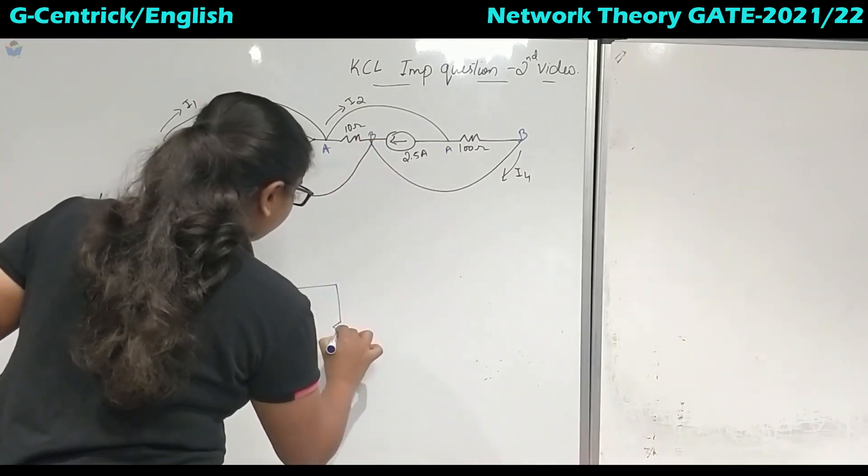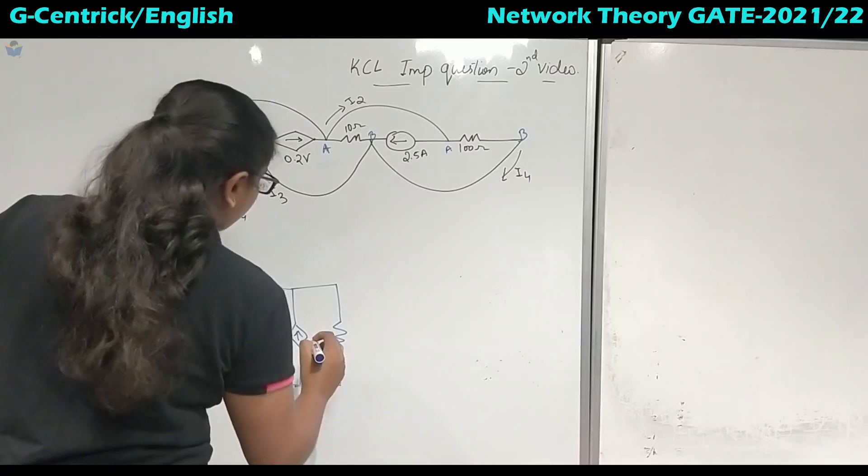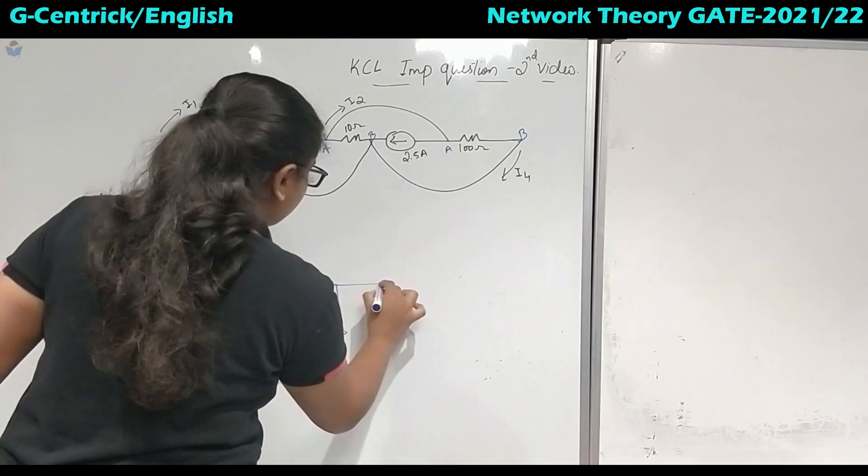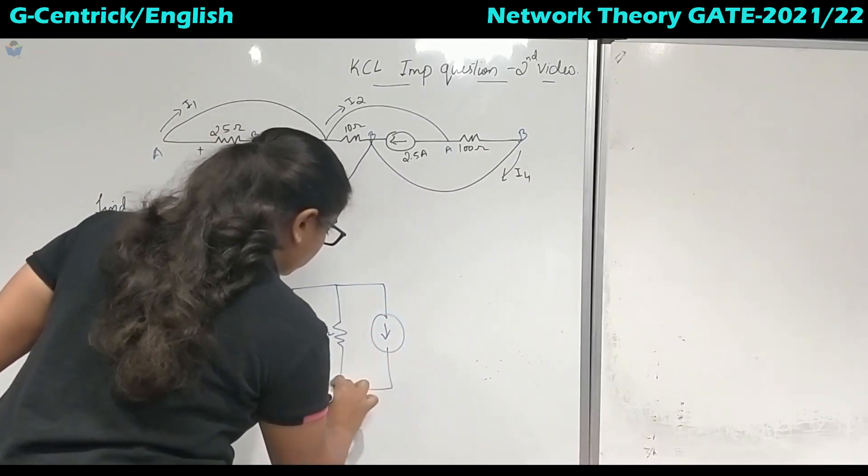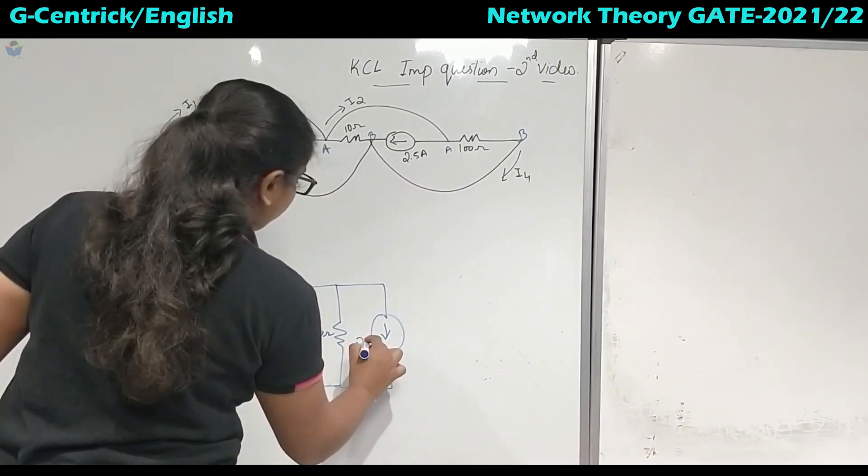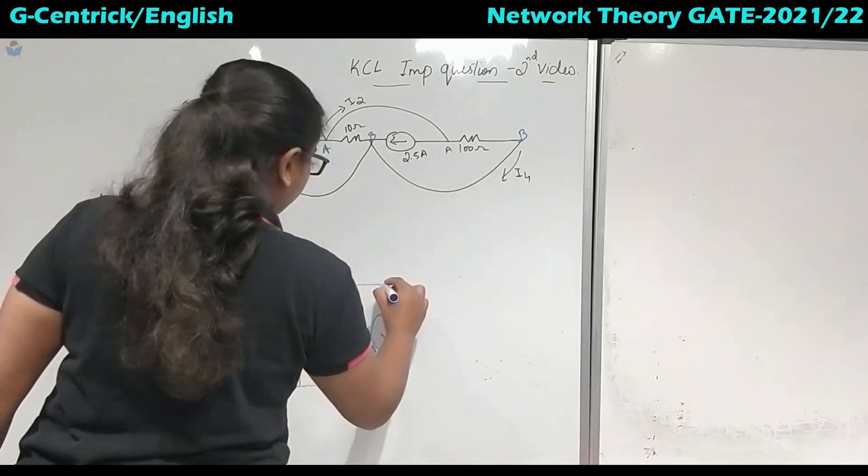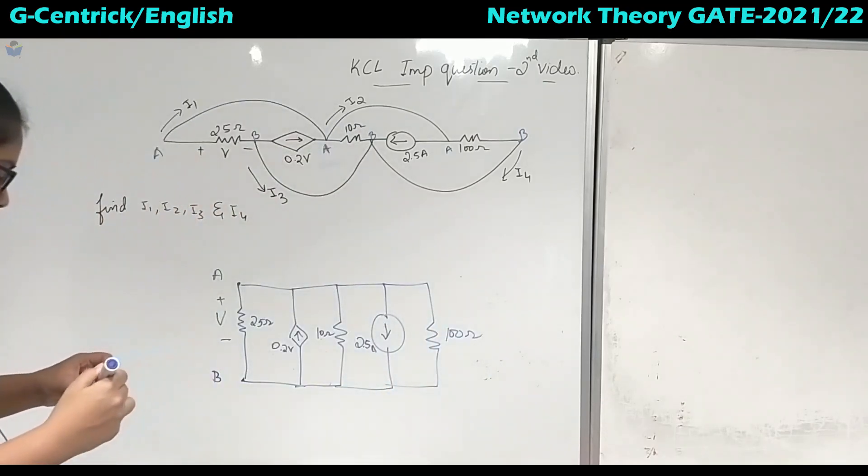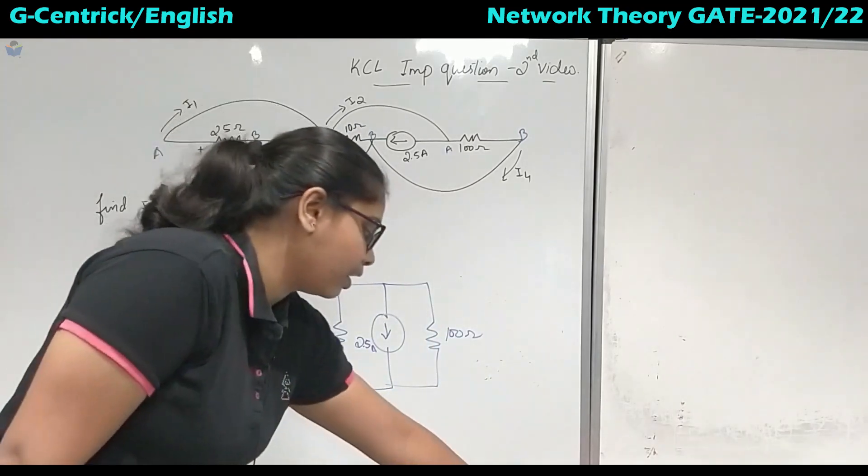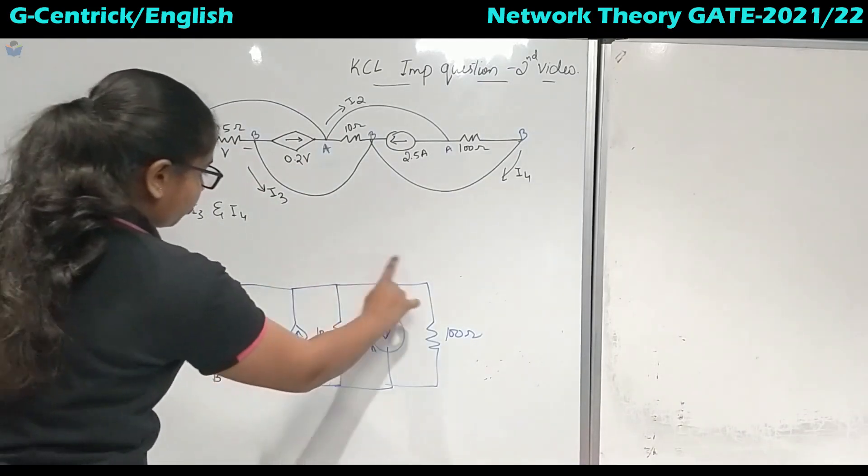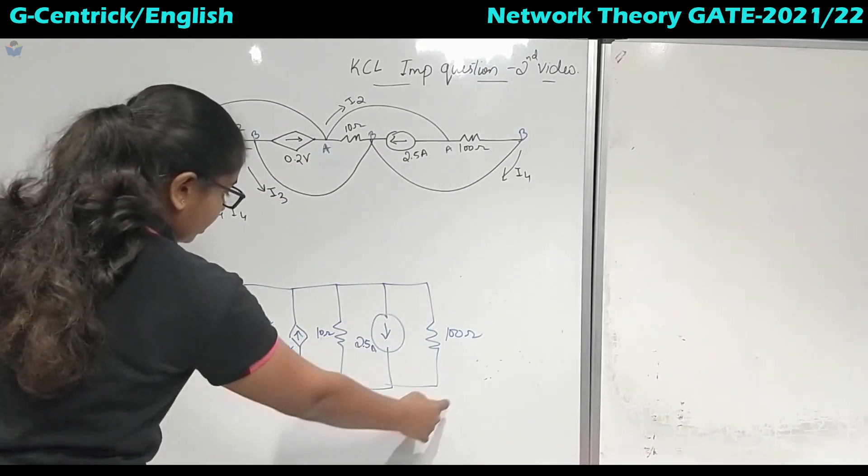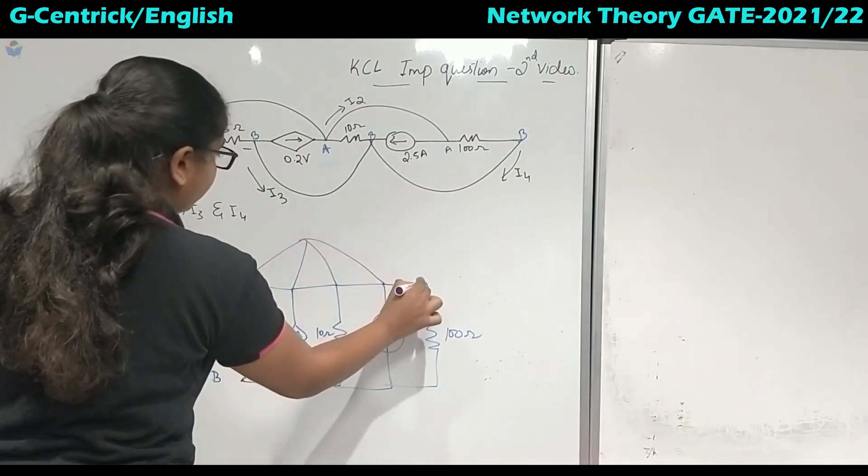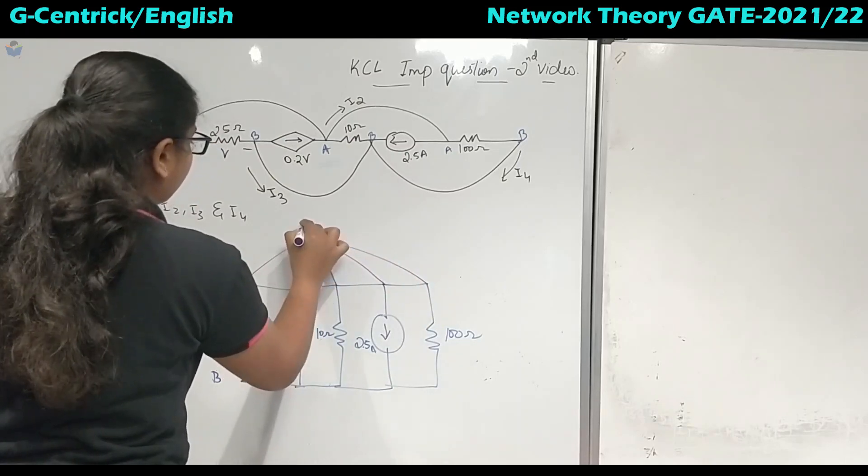Next coming to here, in between B to A, the arrow direction is pointing towards A. So we will draw this as arrow pointing towards the potential A. What is the value? 0.2 volts. Next in between A and B, we have one resistor which is of 10 ohms. Then from B to A, this time the direction of arrow is downwards and it is independent source. So the value is 2.5 amperes and from A to B we have 100 ohm.